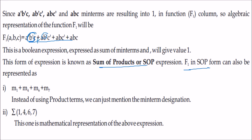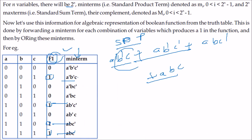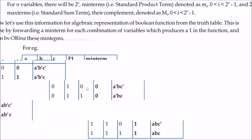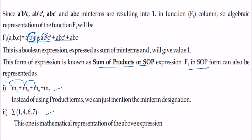F1 can be represented as a sum of products form (SOP). You can also write it using minterm designations: m1 + m4 + m6 + m7, or using sigma notation: Σ(1, 4, 6, 7). All three representations — the full product terms, the minterm sum, and sigma notation — are equivalent representations of the SOP form.